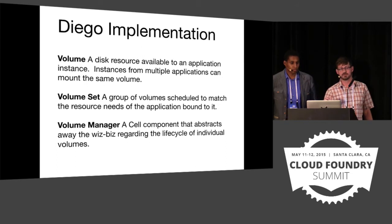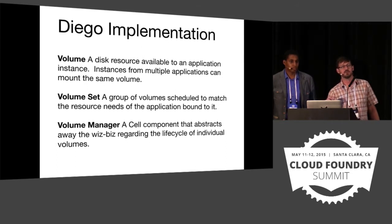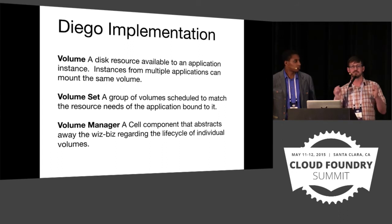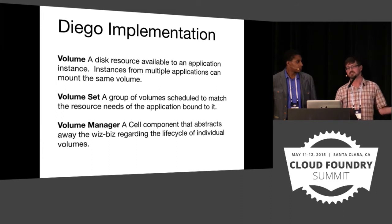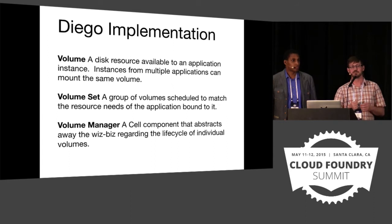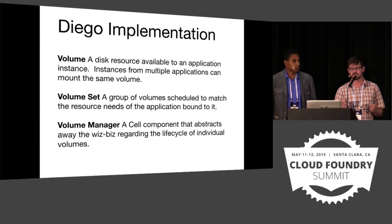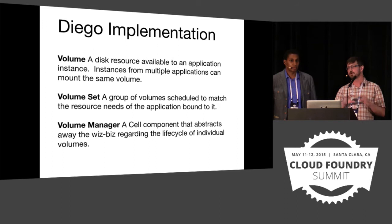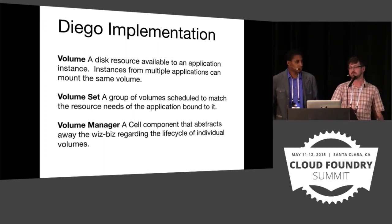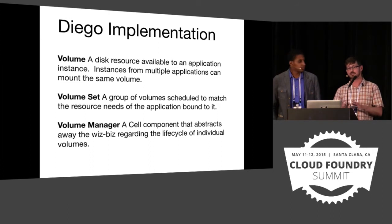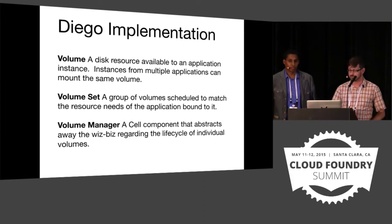When the scheduler schedules a volume, it thinks about it as a volume set. When you're scheduling individual volumes, you're scheduling them against an application that is running many instances — say your Hadoop cluster running 50 instances. When scheduling the volume for that cluster, you're actually scheduling a set of 50 volumes. It's important for the scheduler to think about that as a set because those volumes need to be fault-tolerant relative to each other. You don't want it putting all 50 volumes on the same host.